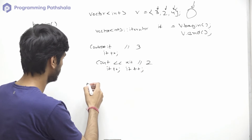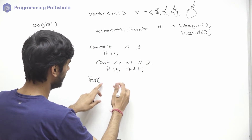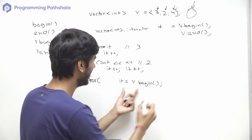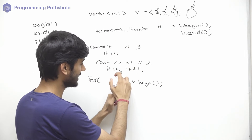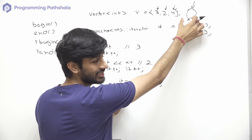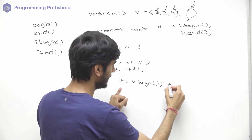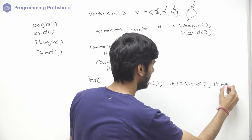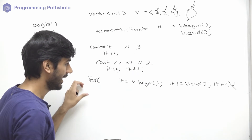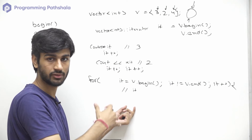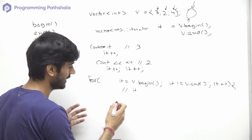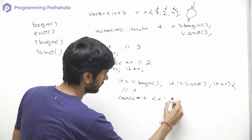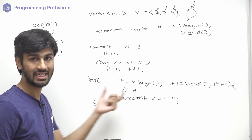To traverse using iterators, we write a for loop where 'it' is initialized to v.begin(). We keep incrementing 'it' until it is not equal to v.end(). Inside the loop, 'it' refers to one of the elements, so we use *it to access and print the value with cout. This will traverse and print the entire vector.